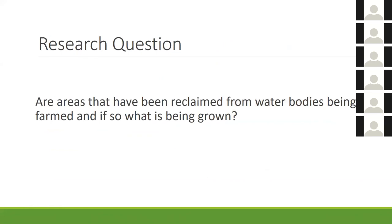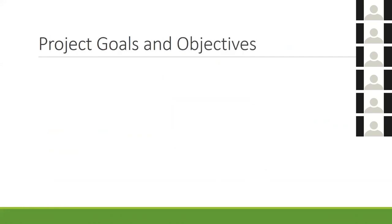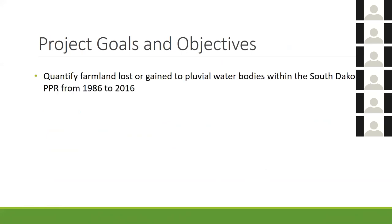My overall research question is: are the areas that have been reclaimed — where water bodies have disappeared — being farmed, and if so, what is being grown there? To help answer that, I've developed several project goals. The first is to quantify the farmland gained or lost to water bodies within the South Dakota prairie pothole region from 1986 to 2016. Starting with 1986 should give a good baseline before the 1990s flooding phenomenon.